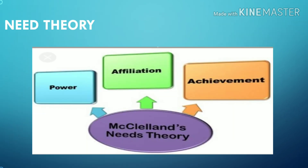Next is the Need Theory, proposed by David McClelland in 1961. There are three needs in this theory, explaining how need for achievement, need for power, and need for affiliation affect people. Need for achievement means a need for sense of accomplishment and attainment of challenging goals. Need for power means a need to be influential, create an impact, and increase prestige and status. Need for affiliation is the desire to form relationships and friendships.